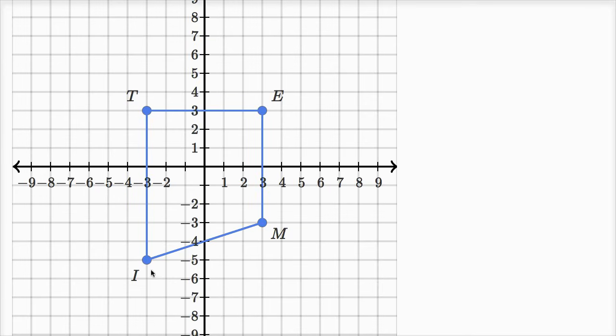For example, this right over here is a quadrilateral. We've plotted it on the coordinate plane. This is a set of points, not just the four points that represent the vertices of the quadrilateral, but all the points along the sides too. There's a bunch of points along this. You could argue there are an infinite number of points along this quadrilateral.